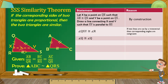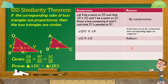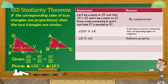Statement 3: Angle Q is congruent to angle Q, by reflexive property. Bali kasi si angle Q ay angle din siya ng triangle QXY, and at the same time angle din siya ng triangle QRS. Pares silang angle itong angle Q — by reflexive property, equal lang siya sa sarili niya.